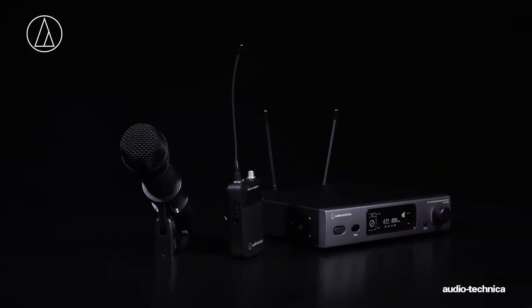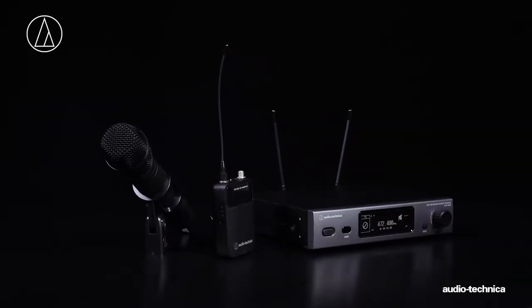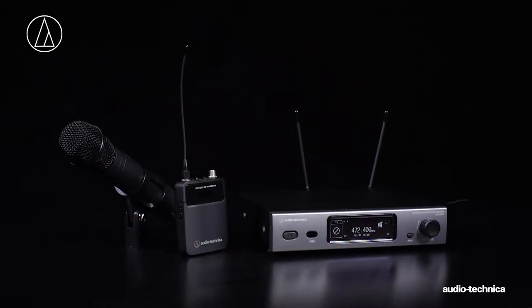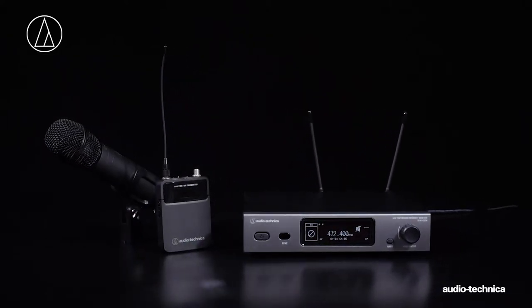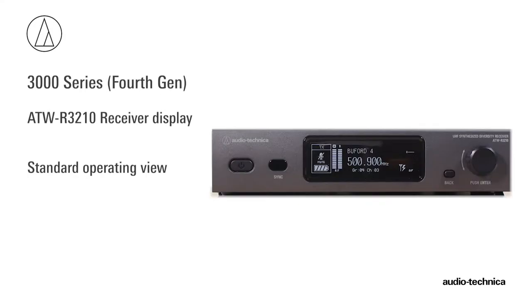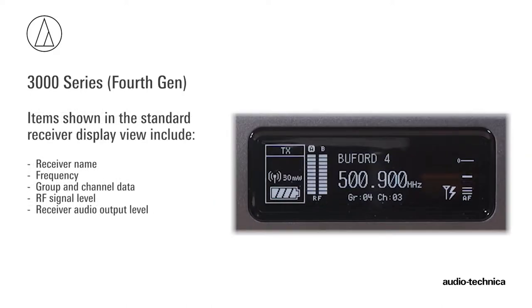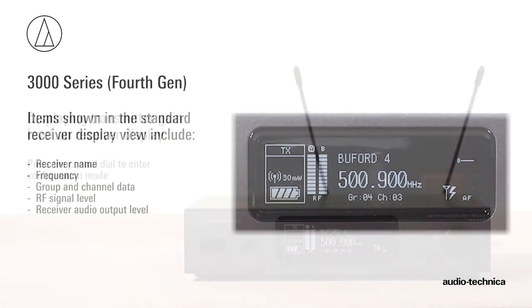The front panel display on Audio-Technica's 3000 Series Generation 4 receiver provides extensive visual display of system operating parameters. It can easily switch from standard operating view to a performance view that emphasizes audio and RF metering. Along with receiver name, frequency, group, and channel data, the standard view also displays basic RF and receiver audio output levels.